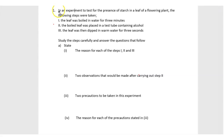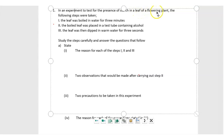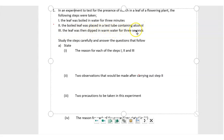Question 1. In an experiment to test for the presence of starch in a leaf of a flowering plant, the following steps were taken. Step I: The leaf was boiled in water for 3 minutes. Step II: The boiled leaf was placed in a test tube containing alcohol. Step III: The leaf was then dipped in warm water for 3 seconds.